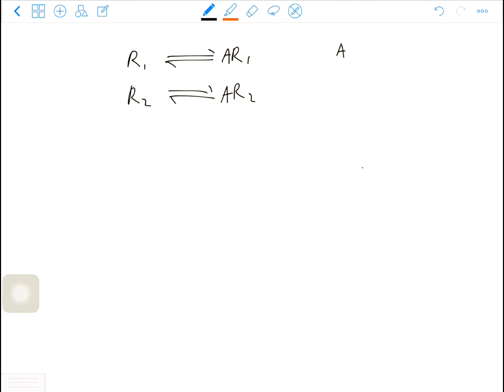If there is a competition from another ligand P, we have PR1, PR2. So in the system, there are two types of ligands and two types of receptors.